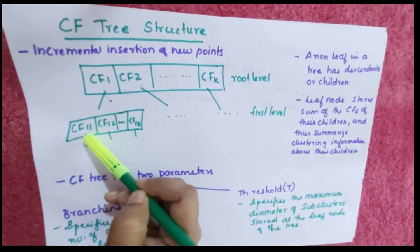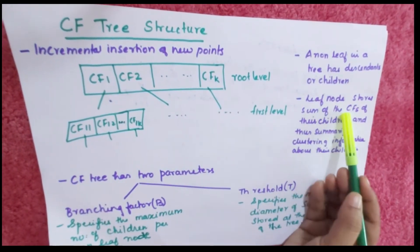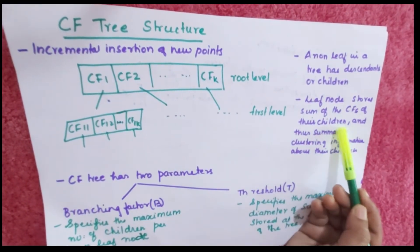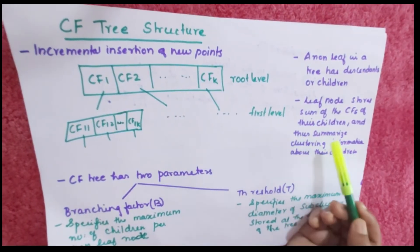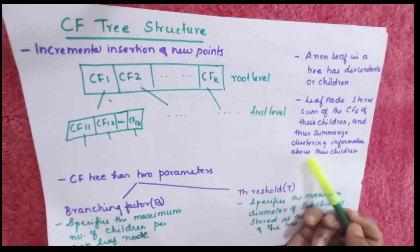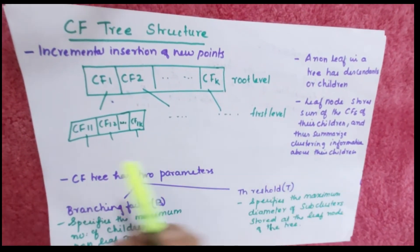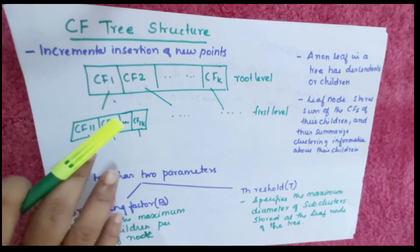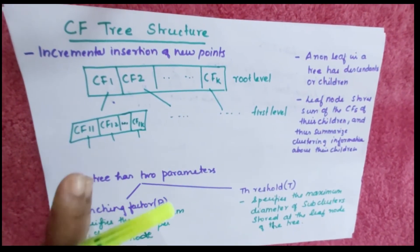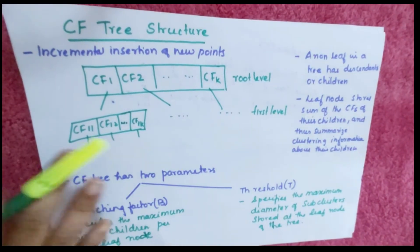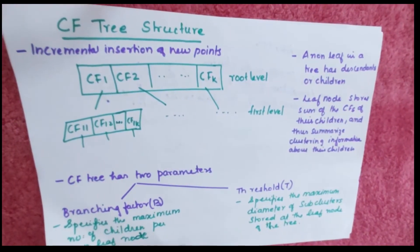A non-leaf node in the tree has descendants or children. Leaf nodes store the sum of the CF of their children and thus summarize the clustering information about the children.